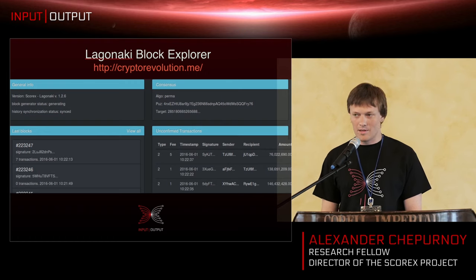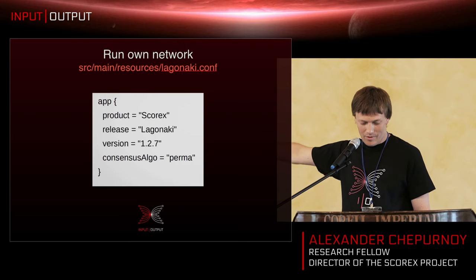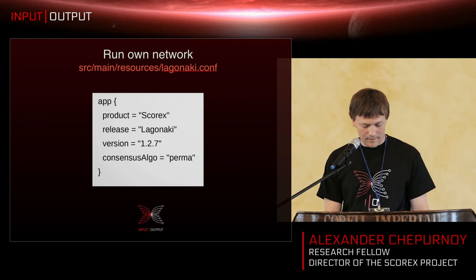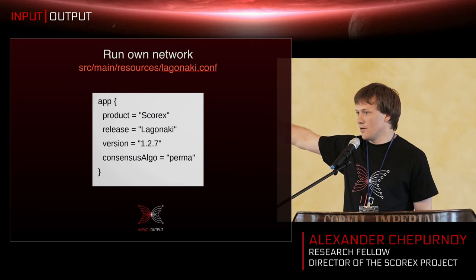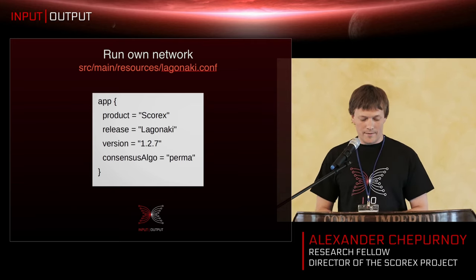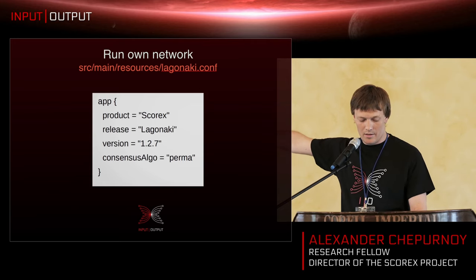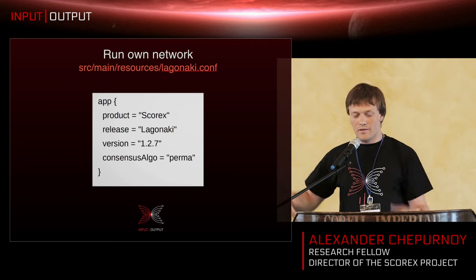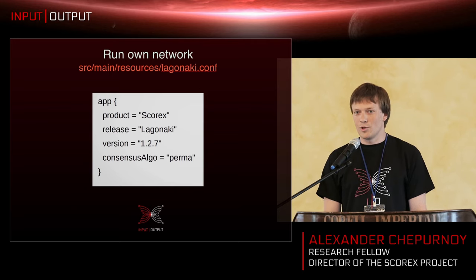One enthusiast has even implemented a block explorer for Lagonaki, available at cryptorevolution.me. You can see blocks, the unconfirmed transaction pool, and some general information. If you want to run your own private network, set your own seeds in the configs. To change the consensus protocol, just set it in lagonaki.conf on the last line — change it to primecoin, NXT, or Quora. There are three possible options.